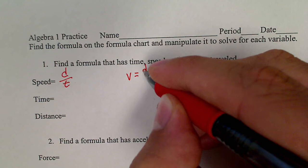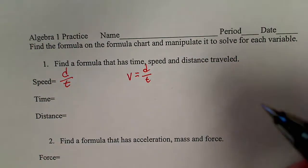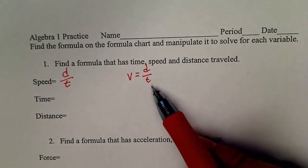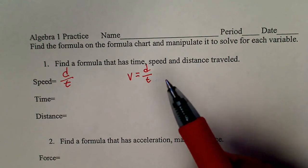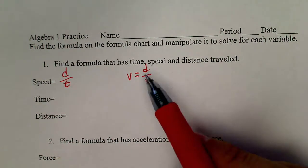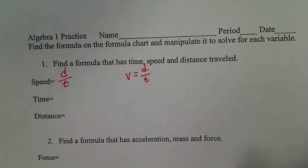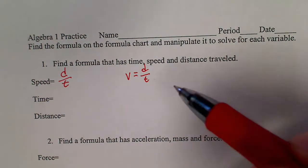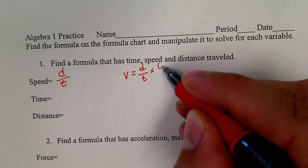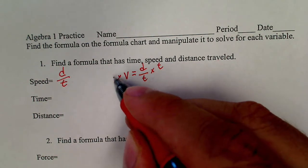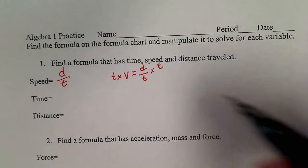So, if we start with V equals D over T, we want to get this T by itself. Now, before we even start thinking about anything, if we see an equation and it has a fraction, we want to get rid of the fraction. How we do that is we multiply by whatever is on the bottom. Multiply both sides.